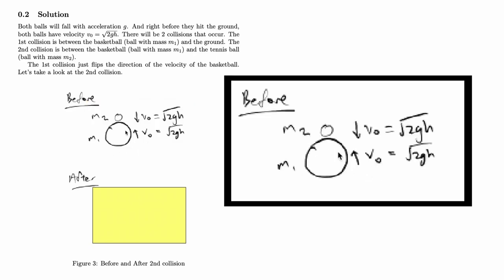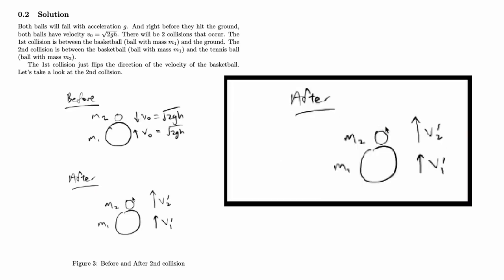Before the collision, we know that the basketball is moving up with a velocity of v0 and the tennis ball is moving down with a velocity of v0. After the collision, we currently do not know the exact velocity of both the basketball and tennis ball and that is where we use v1' and v2' to denote the unknowns.